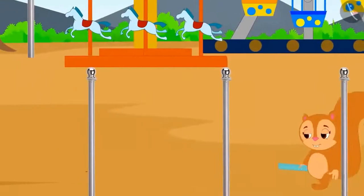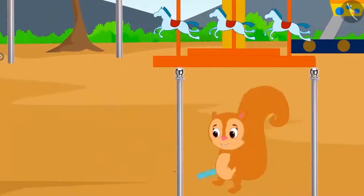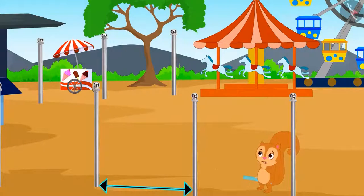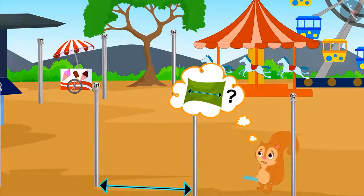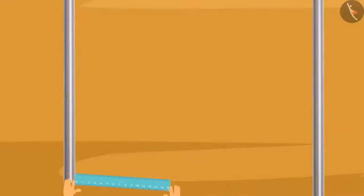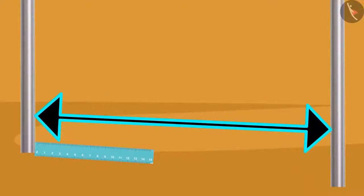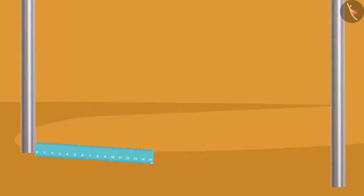She immediately reached the fair taking her 15 centimeter ruler. Poles were erected at the places where curtains were to be hung. Chanda thought that if she measures the distance between the poles, then she will get the size of the curtain. Chanda began to measure the distance between the poles with her ruler, but Chanda's ruler is very small and she is unable to measure the distance between the poles.